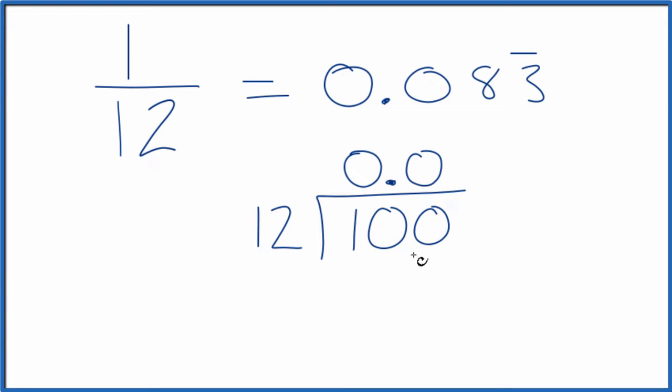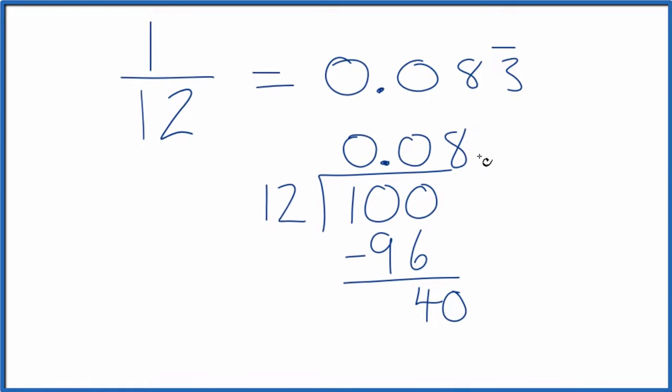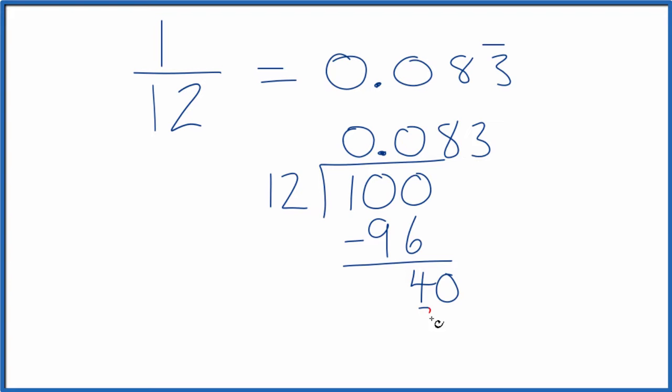Now 12 will go into 100 because 8 times 12, that's 96. So we subtract and we have 4. 12 doesn't go into 4. Call it 40 and we move over 1. 3 times 12, that's 36.